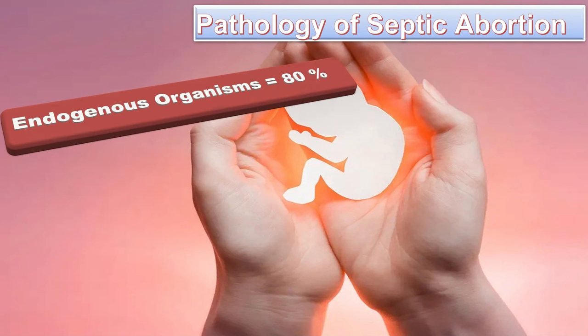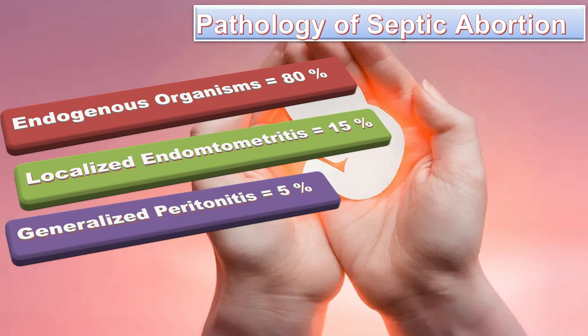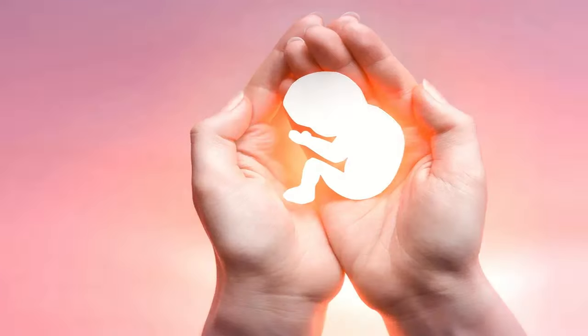Regarding the pathology of septic abortion: in 80% of cases the organisms are endogenous in origin, infection is localized to the products of conception, and there is no myometrial involvement. In 15% of cases, infection produces localized endomyometritis. In 5% of cases, there is generalized peritonitis or endotoxic shock. In some cases there is necrotizing infarction or toxic shock syndrome.